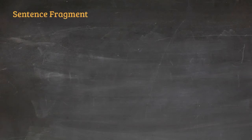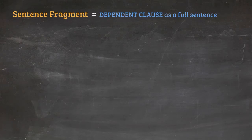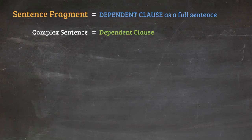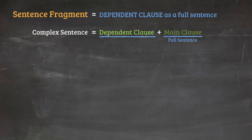Another way we make sentence fragments is when we have only a dependent clause as a full sentence. As we know, a complete sentence, especially a complex sentence, consists of a dependent clause and a main clause. A main clause by itself is a complete sentence — there is no problem there. However, a dependent clause by itself is not a complete sentence.